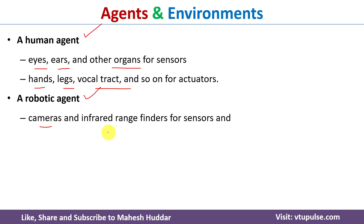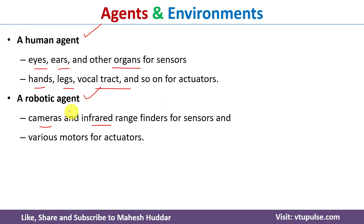Similarly, if you consider a robotic agent, cameras and infrared range sensors will act as sensors. With the help of these, the robotic agent will sense the current environment. The robotic agent will then perform actions with the help of robotic arms or similar devices, which act as actuators in this case.